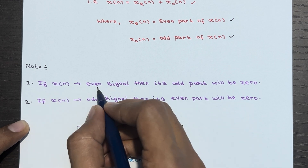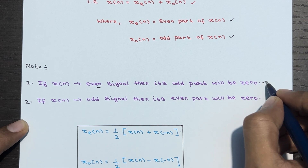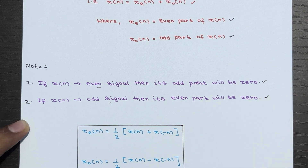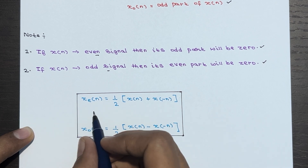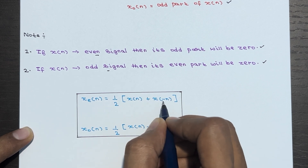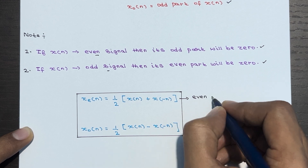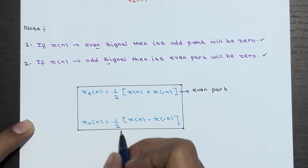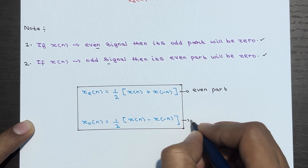If X(n) is a pure even signal, its odd part will be zero. If X(n) is a pure odd signal, its even part will be zero. The formula to calculate the even part is: Xe(n) = (1/2)[X(n) + X(-n)], and the formula for the odd part is: Xo(n) = (1/2)[X(n) - X(-n)].